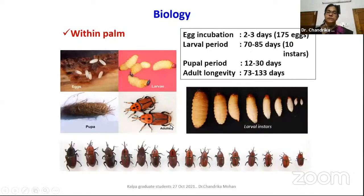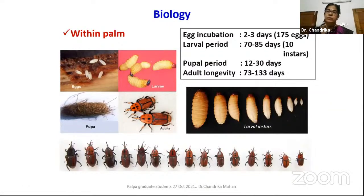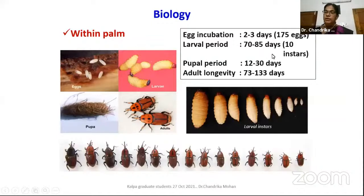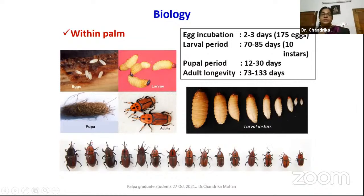Here you can see pictures of how the red palm weevil looks. These are the eggs, scooped into the soft portion of the palm tissues. Eggs hatch in about two to three days, and fecundity is about an average of 175 eggs per female. A single female can lay about 175 eggs on average, and a single female attack can kill a palm. Larval period is 70 to 85 days, then 12 to 30 days pupal period, and adult longevity is more than three to four months.